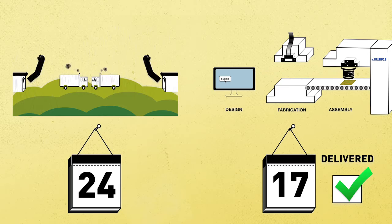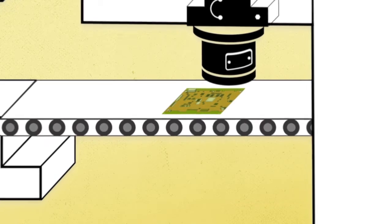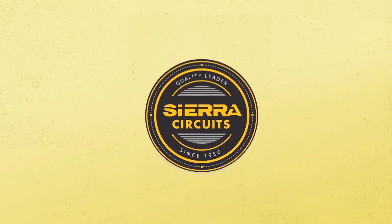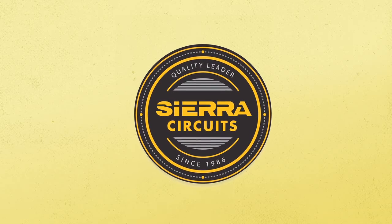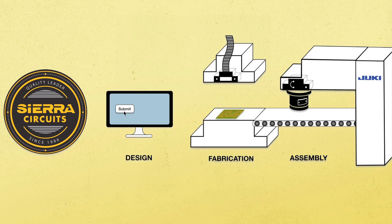So say goodbye to missed deadlines and put an end to the headaches of juggling multiple vendors. Stop wasting time and money. Partner with Sierra Circuits, your one-stop source for building quick turn prototype printed circuit boards from design through assembly.